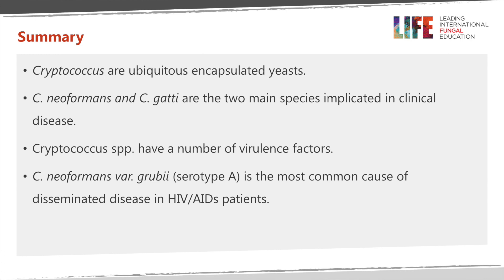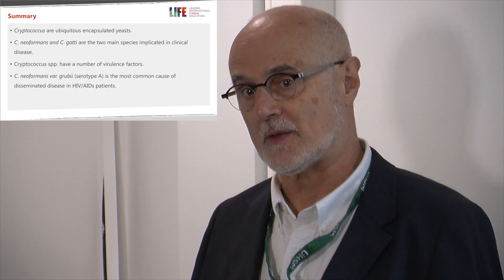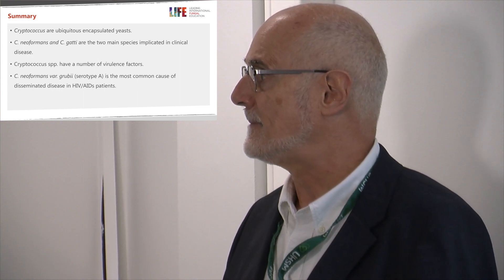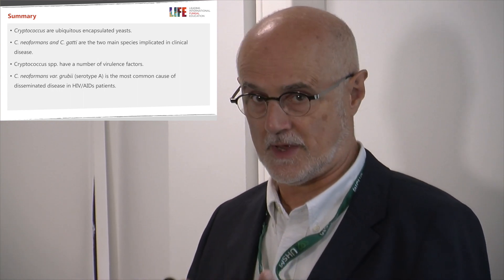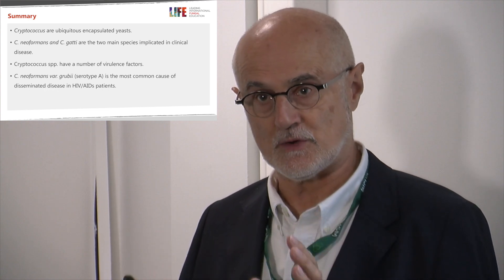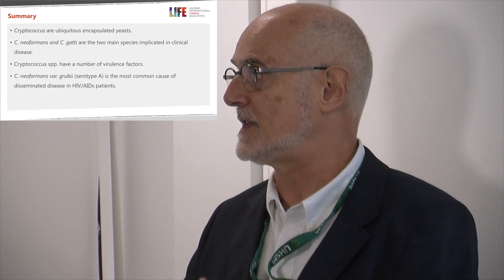In summary, Cryptococcus species are ubiquitous in the environment globally and it's an encapsulated yeast. There are two main species, Cryptococcus neoformans and Cryptococcus gattii, implicated in clinical disease. It has a number of virulence factors as outlined, and Cryptococcus neoformans variety grubii, serotype A, is the most common cause of disseminated disease in HIV and AIDS patients. Thank you very much.